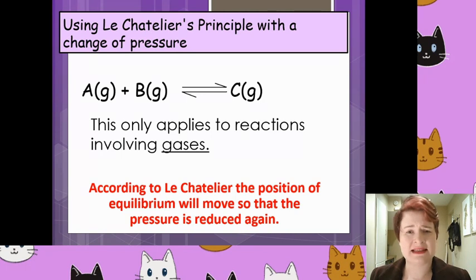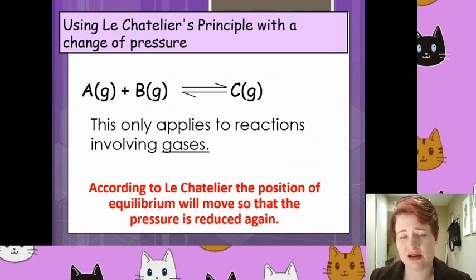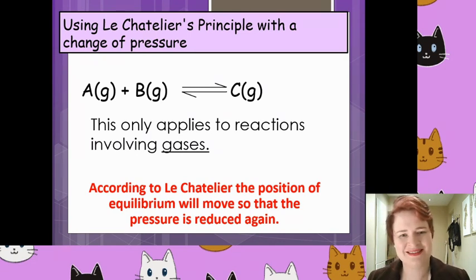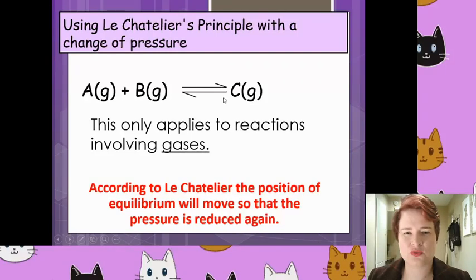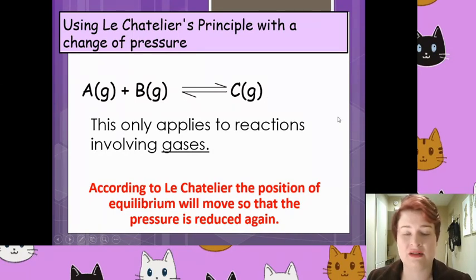With gases, when talking about pressure and gases at equilibrium, we always need to link it back to the number of particles present. If you increase the pressure, the chemicals will try to decrease the pressure. If you decrease the pressure, they'll try to increase it. This reaction is happening in the same reaction vessel at the same time at the same rate — increasing pressure affects the whole system.